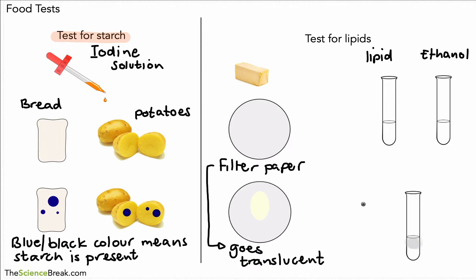You will see a cloudy appearance - the solution will go cloudy. If we have that cloudy appearance, we know that we have lipid in our sample. A cloudy appearance means lipids are present. That's our second food test - the test for lipids with two methods.